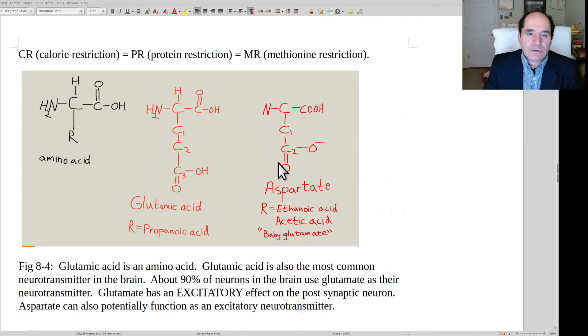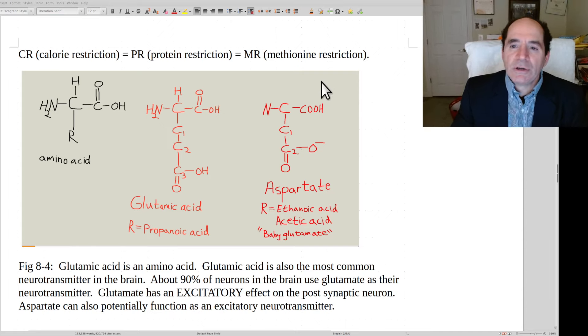So here I wrote it out as an equation. Caloric restriction can be equaled by protein restriction, and this apparently can be equaled by methionine restriction. So if all you have to do is just reduce your intake of one amino acid, one essential amino acid, that might be very easy to do, versus caloric restriction, like we said, that might be hard to do. This could be pleasantly easily done.